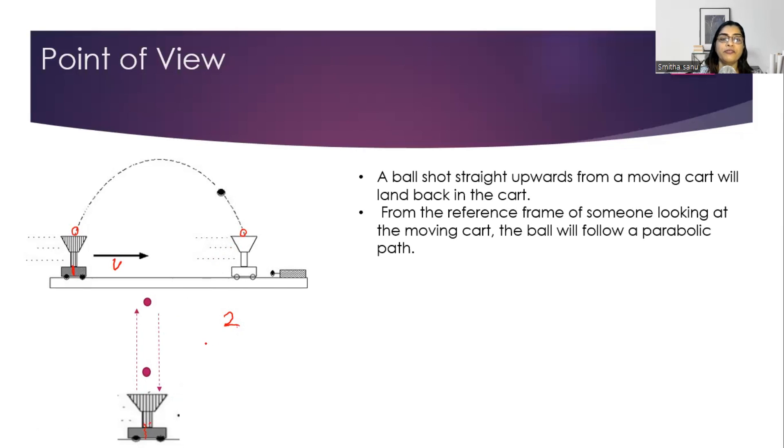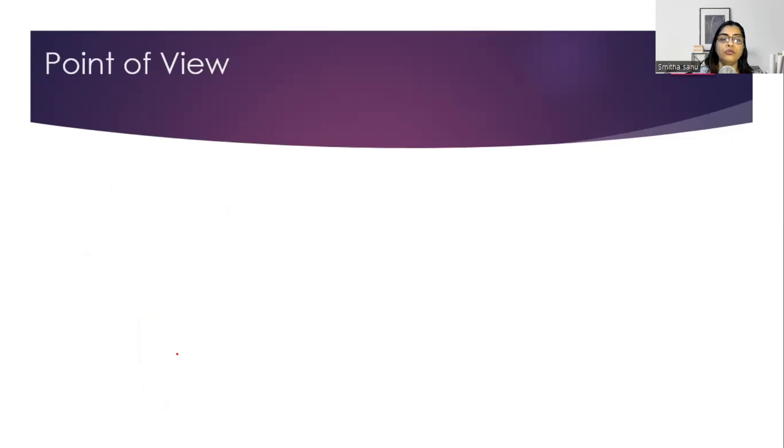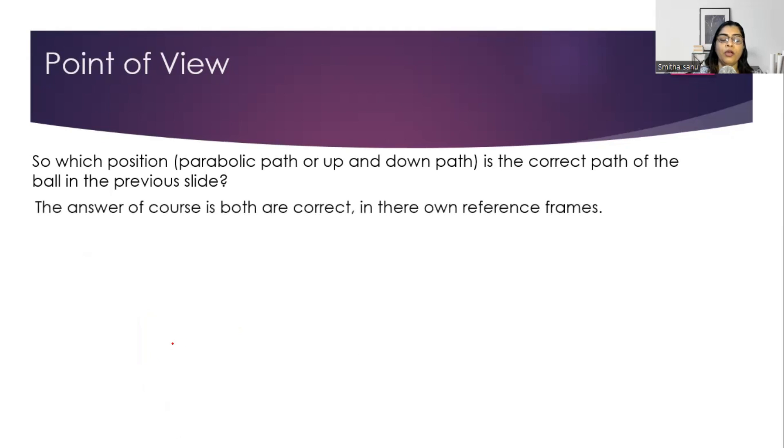Can you see for person one and person two, the point of view was different? For person one, the same ball just moved in a straight line, while for person two, the point of view gave a parabolic path. So who do you think perceived it correctly? Can we tell that the ball moved in a straight line was correct and the parabolic path was wrong? No.